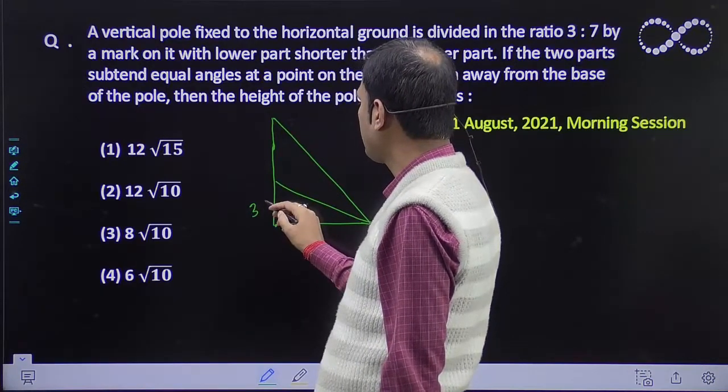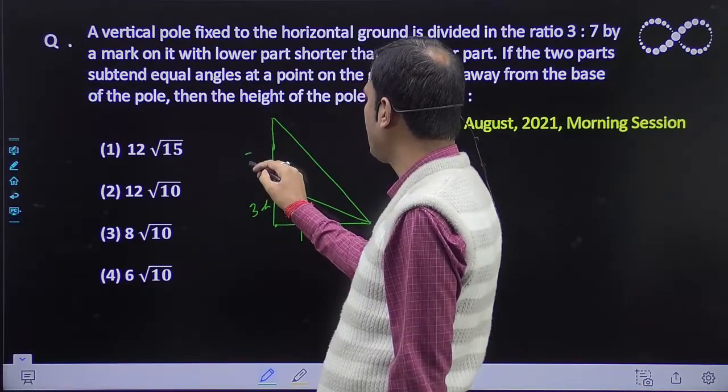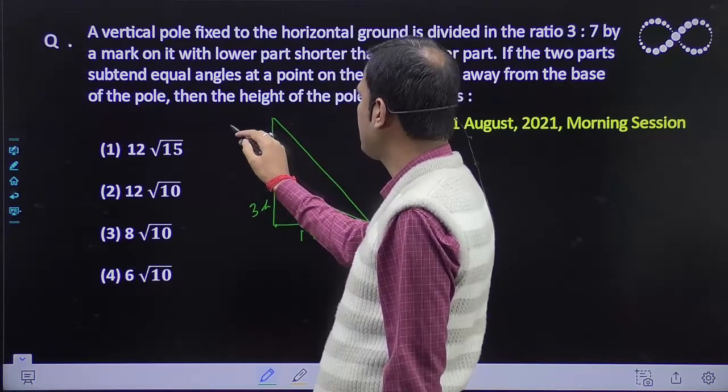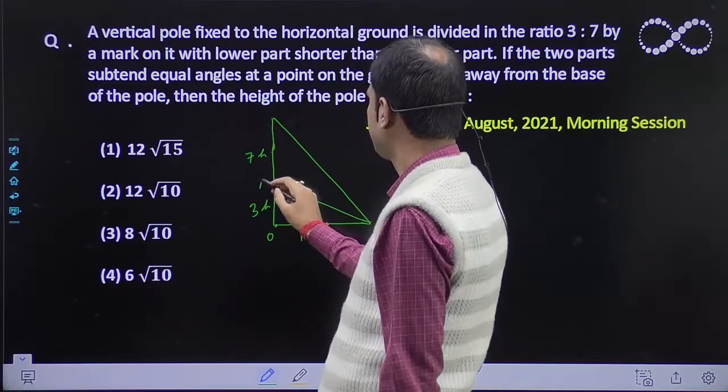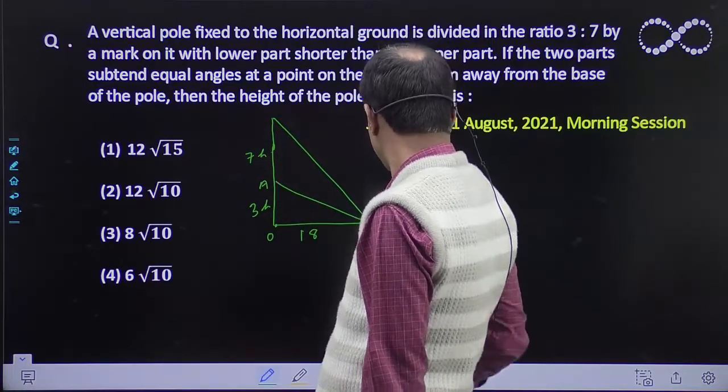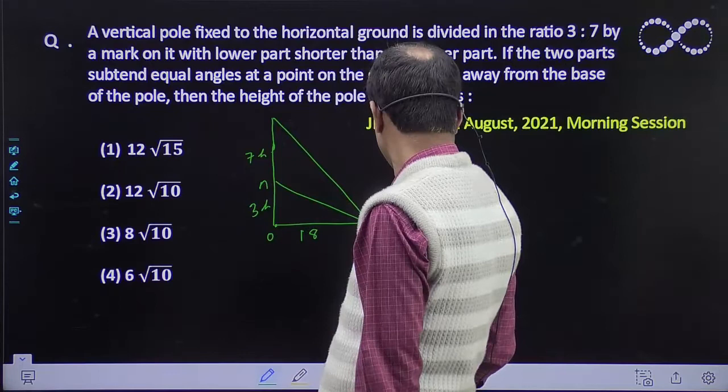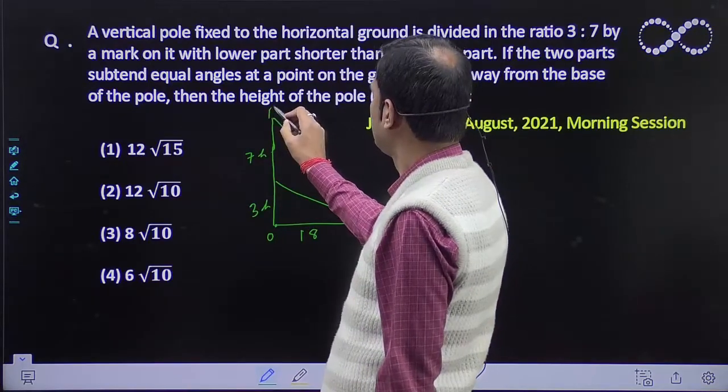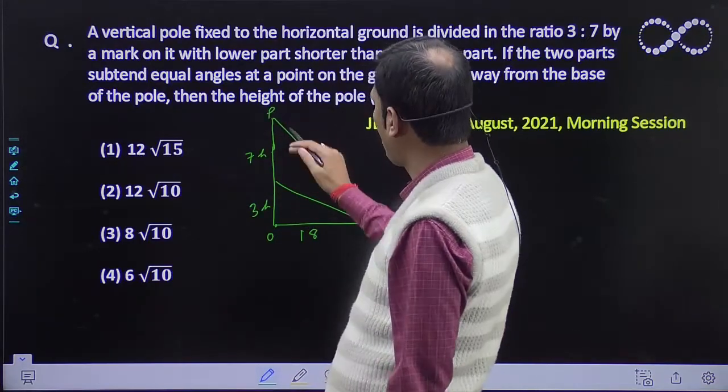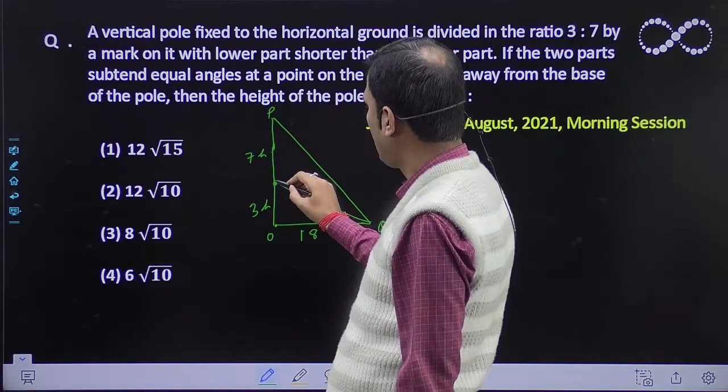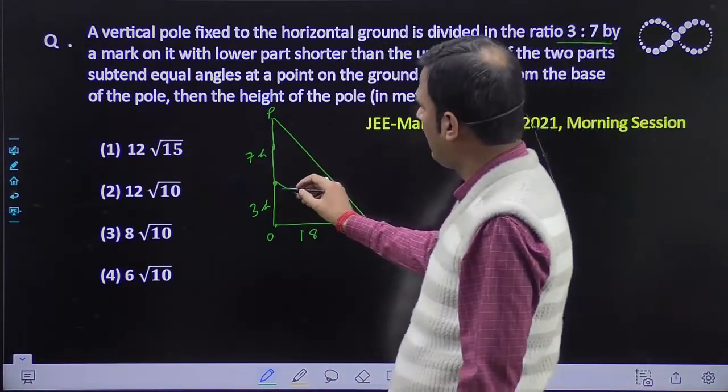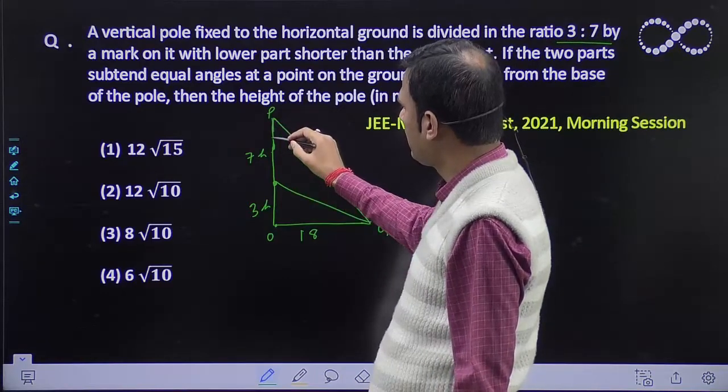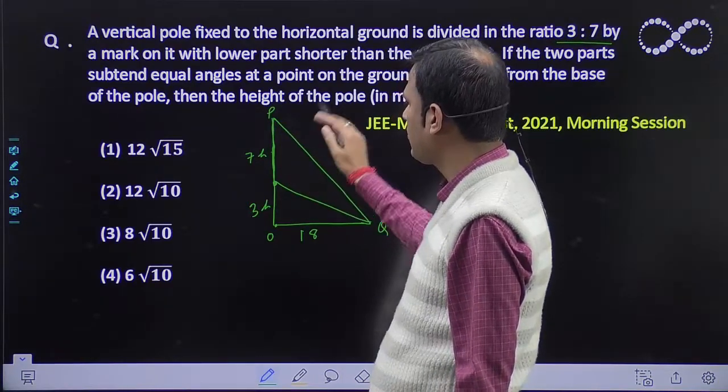This is the pole. One is taken like this, and one is taken like this. It divides you 3 is to 7. So suppose the pole's length is h, this is 7h, this is 3h, and this is 7h. This is your OP.